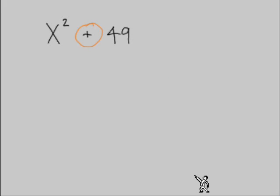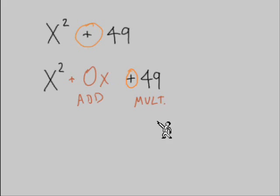Now let's go back to thinking of it as three terms. So we have a 0x for our missing term, but this is a positive 49. So when we think of a pair of numbers, we're saying multiplied together, this pair of numbers should equal a positive 49, and added together, it should equal 0.